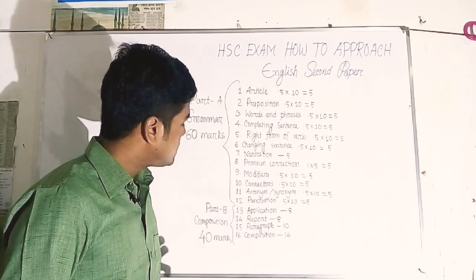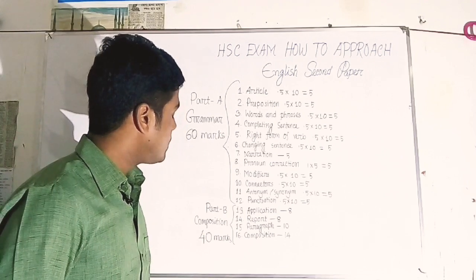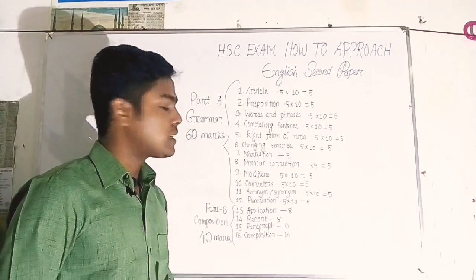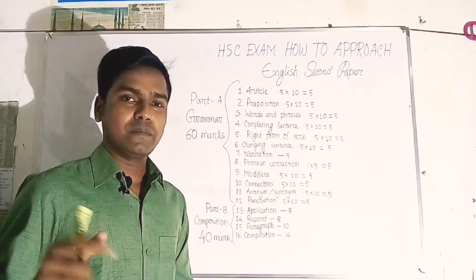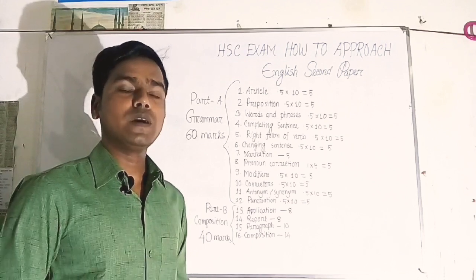The composition section carries 40 marks total. This includes items like dialogue writing worth 5 marks, as well as paragraph writing and other composition items, each carrying their respective marks.